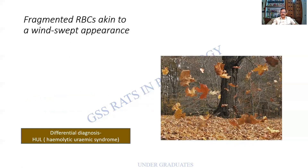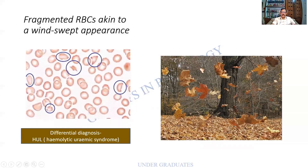What you are seeing on the screen is dried leaves flying — called a windswept appearance, seen in dry weather when shed leaves fly through the air. This appearance is seen in hemolytic uremic syndrome, or HUS. The fragmented, holly-leaf-like cells flying about represent a windswept appearance, which is classical of hemolytic uremic syndrome — an important differential diagnosis for TTP.